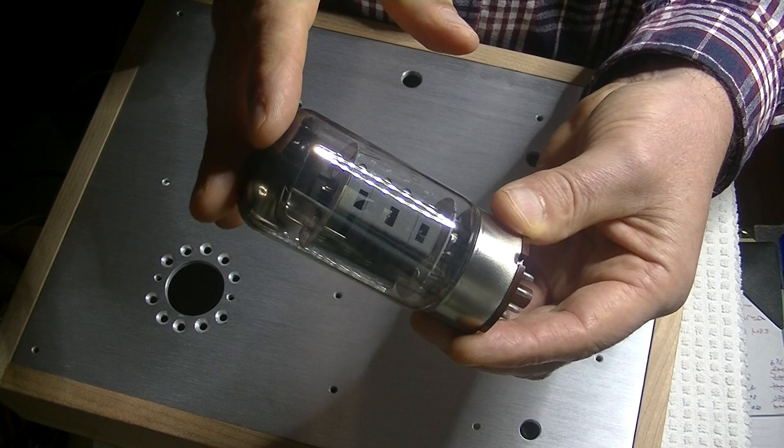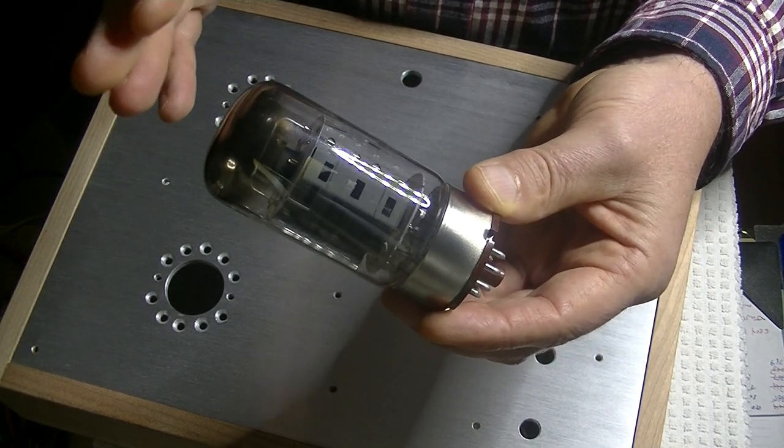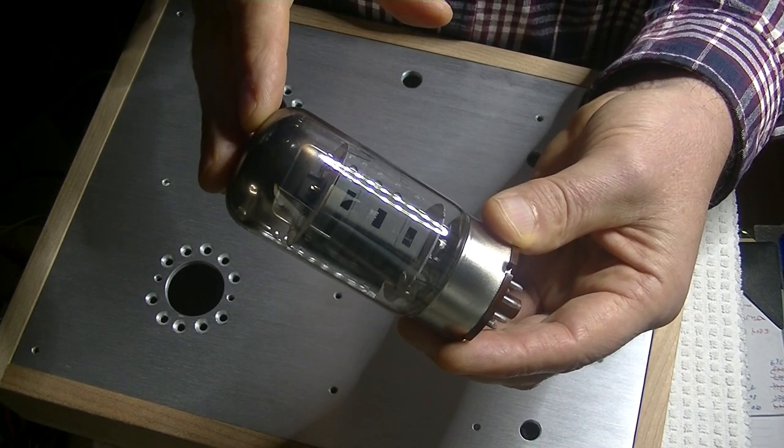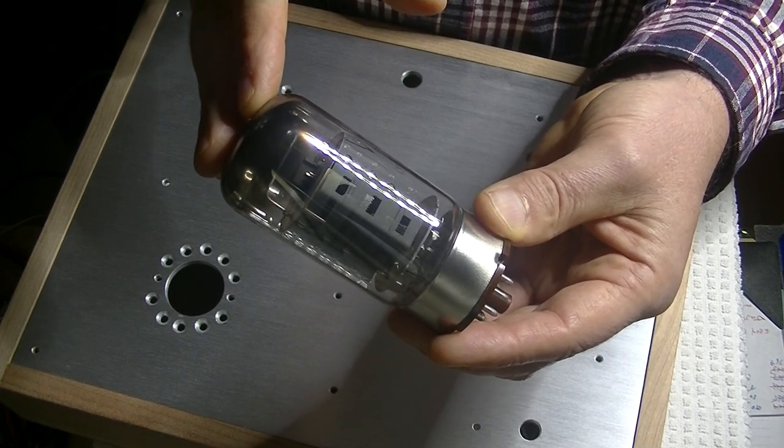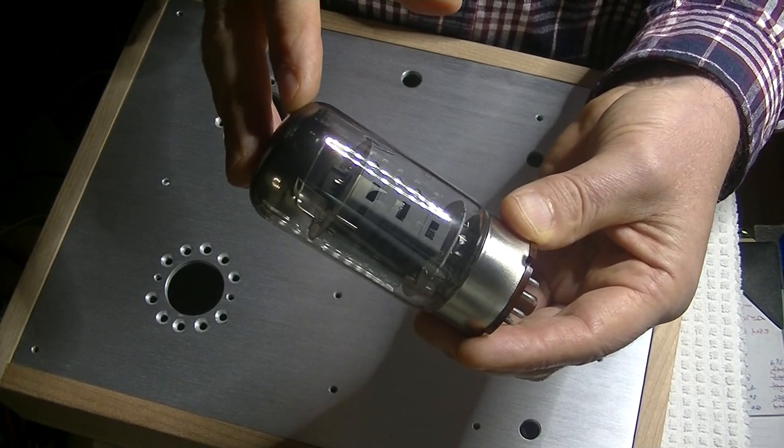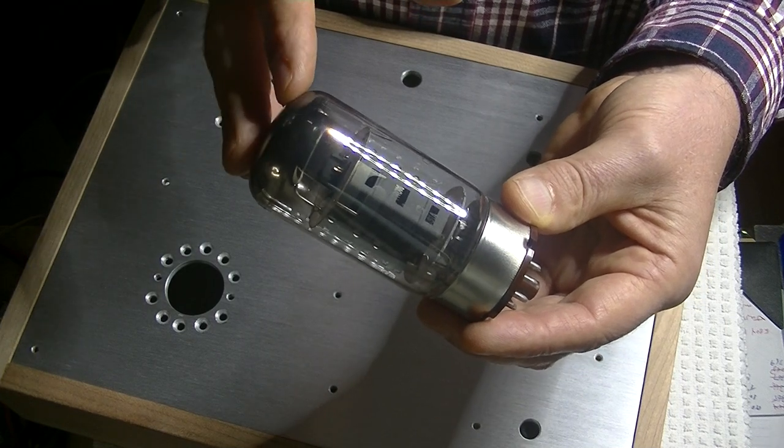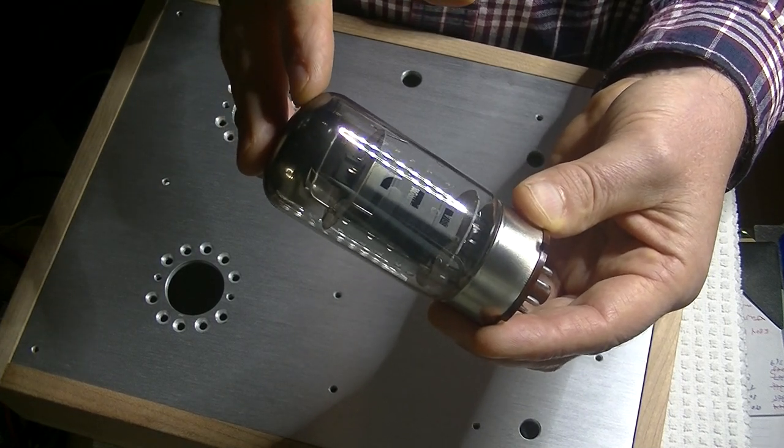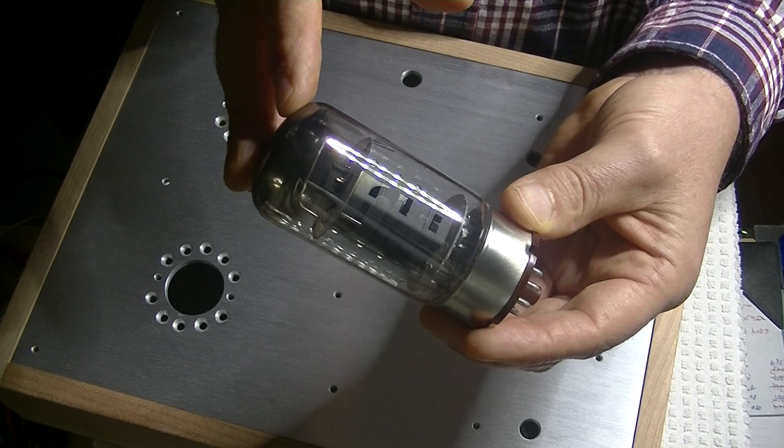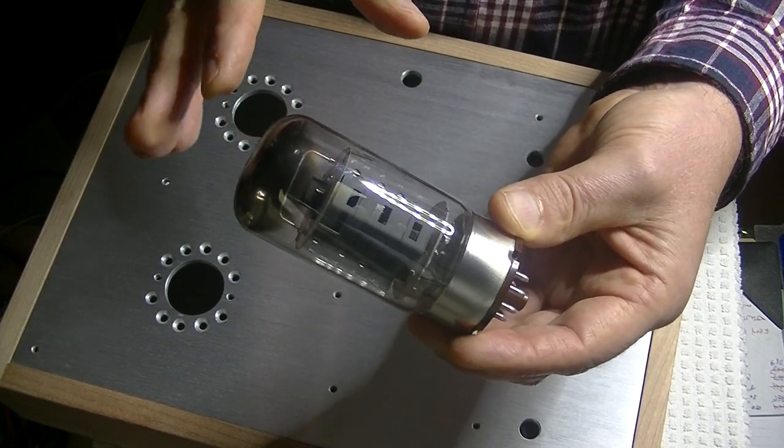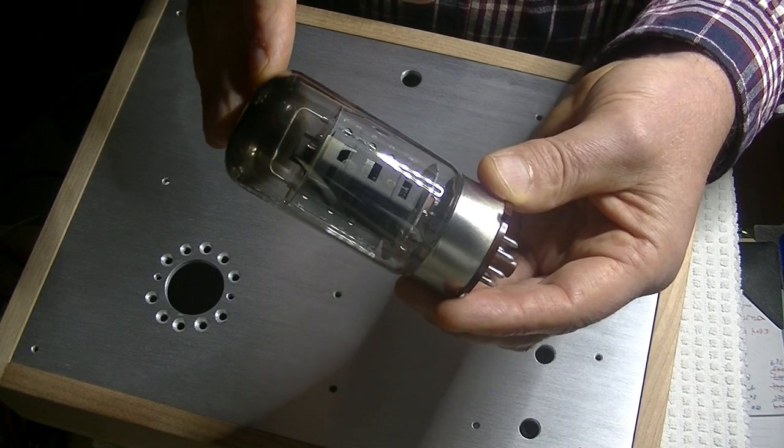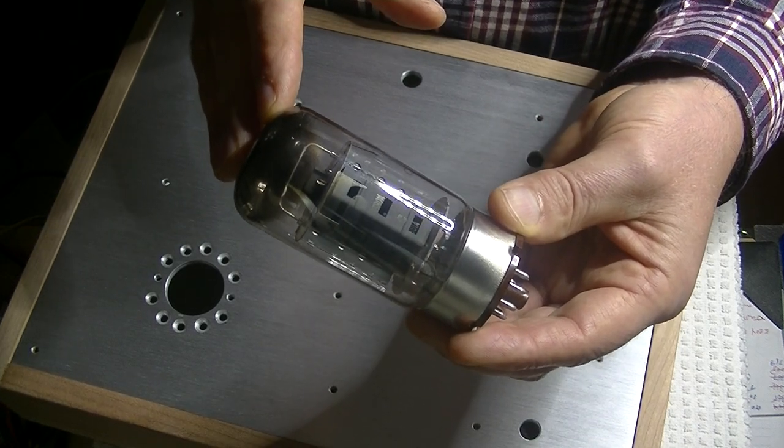Because these lower-powered tubes are fairly similar in an electrical circuit to an EL34. So, often, with a simple bias switch on an amplifier, you can go from a 6550 to an EL34. That's why you'll find an amp will use two different power tubes.